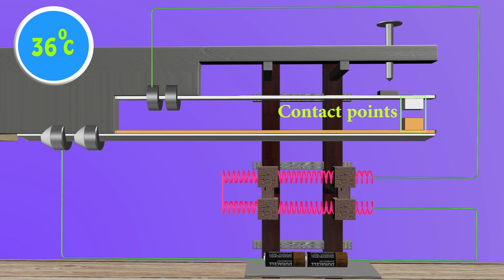Two contact points are fixed with both spring and bimetallic strip. A control knob is provided to adjust the threshold temperature setting.